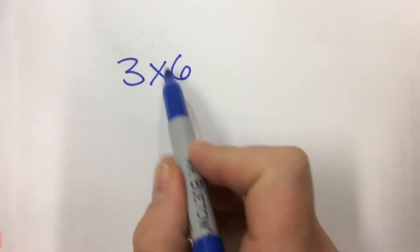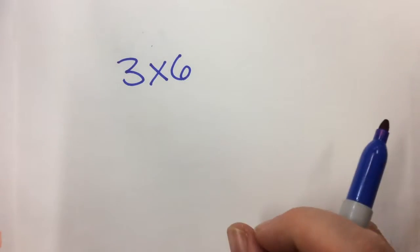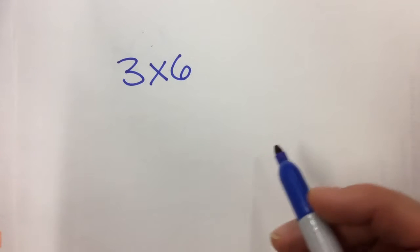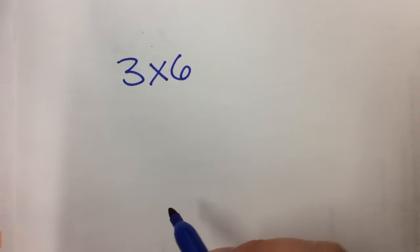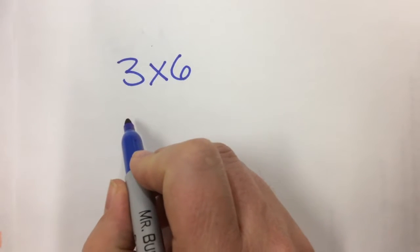But in higher mathematics, when we have a times sign like this, we might get it confused with an x that we might see in algebra. So there's another way to write notation for multiplication that's a little bit easier, and you're going to see it more often as you get into higher math. I'm going to show you what it is.